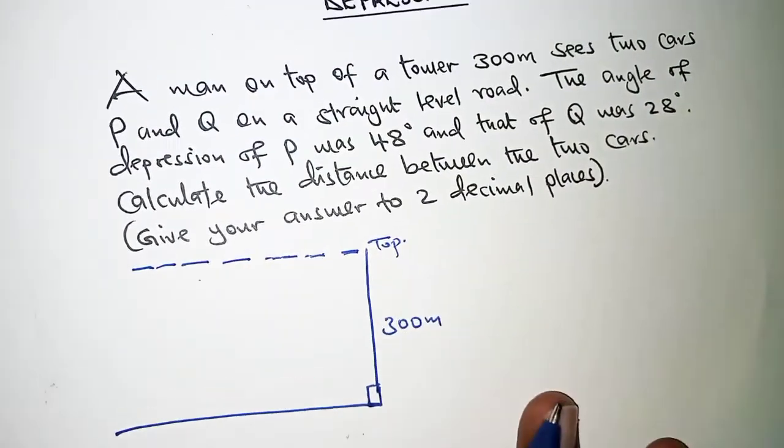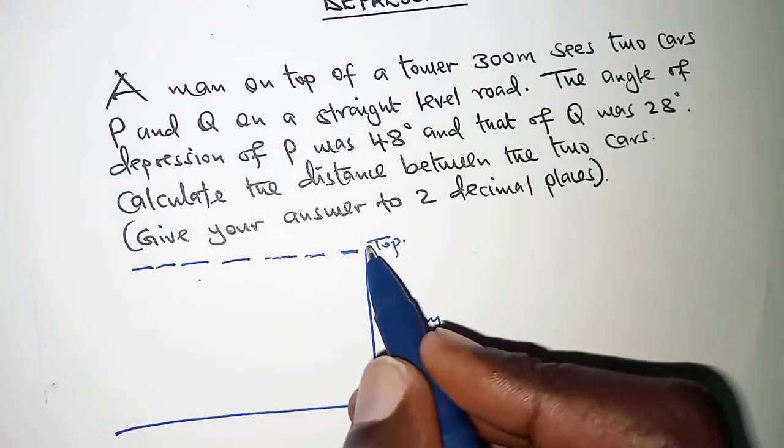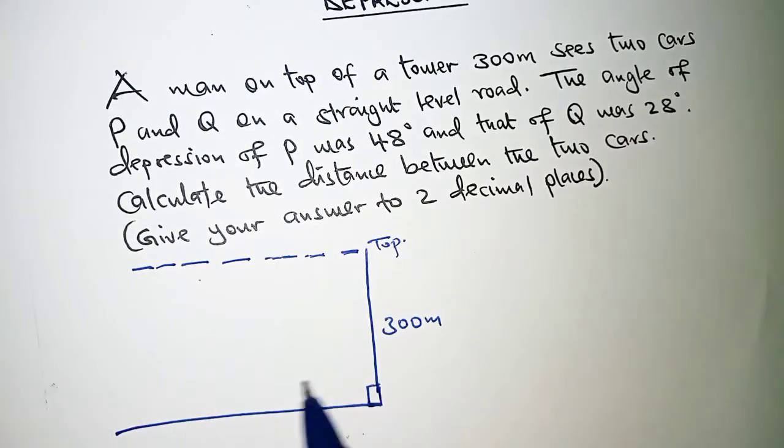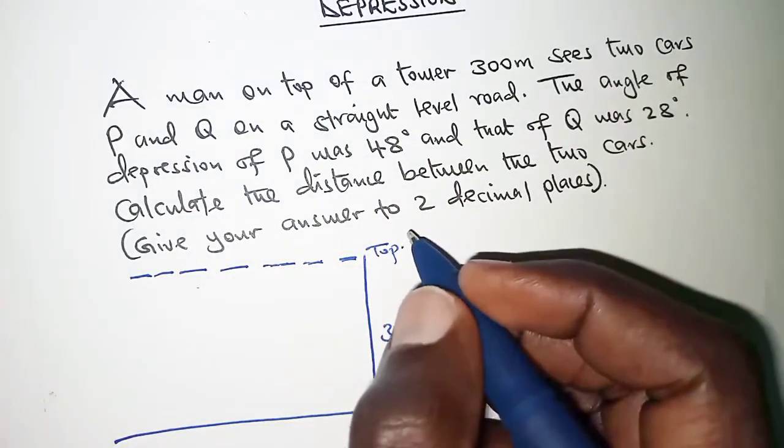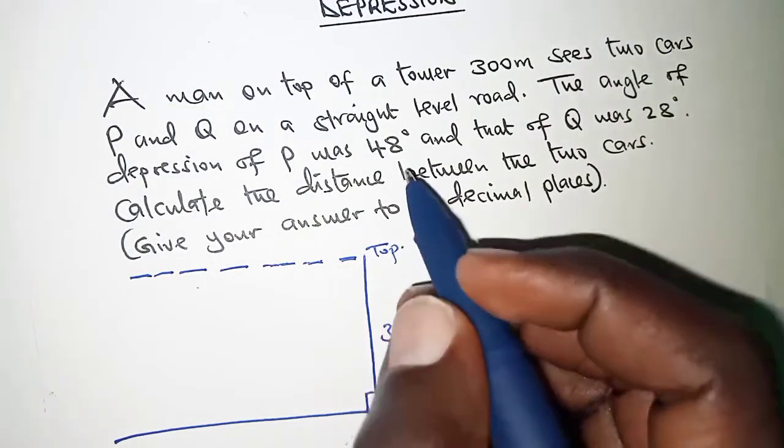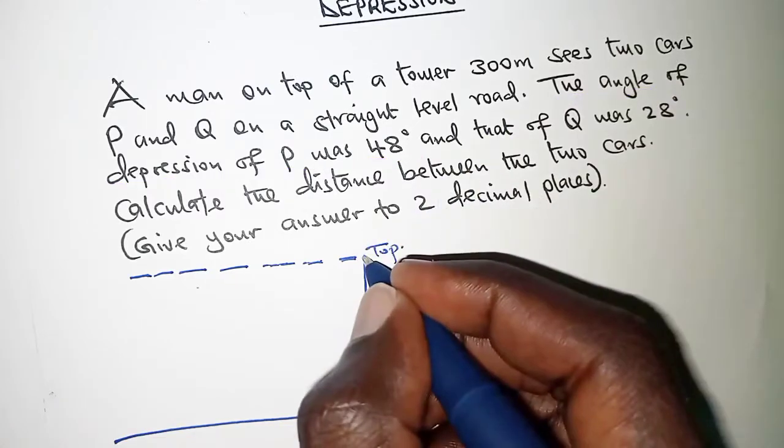And then, the man observes two cars on the ground and there is a car which he observes at an angle of depression of 48 degrees.